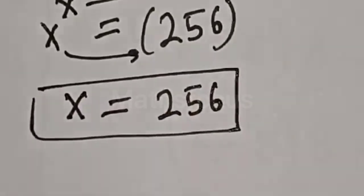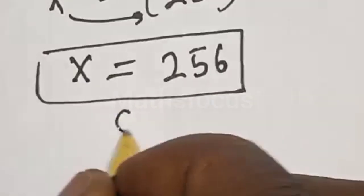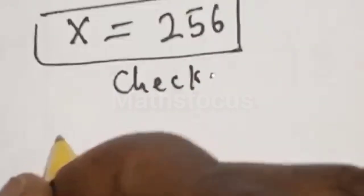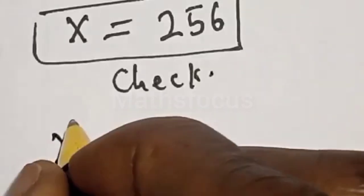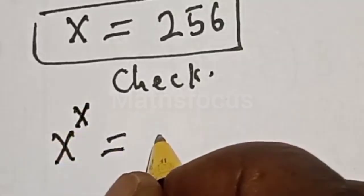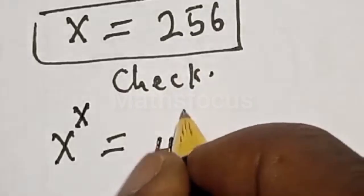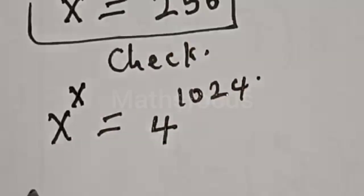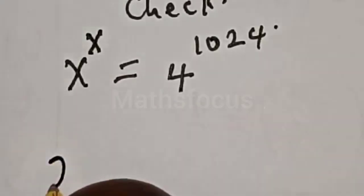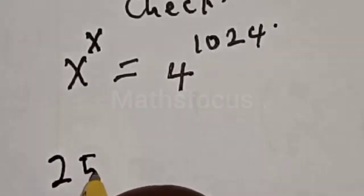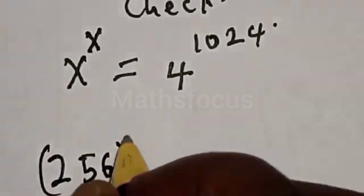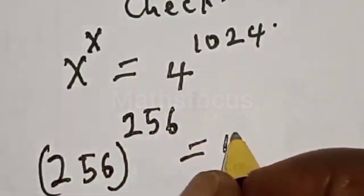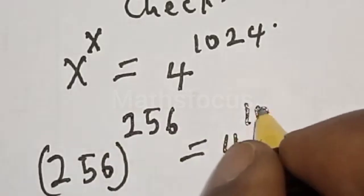We can check to confirm if our answer is right or wrong. Let's check. We have the given question: S raised to power S is equal to 4 raised to power 1024, and our S is 256. We have 256 raised to power 256 is equal to 4 raised to power 1024.